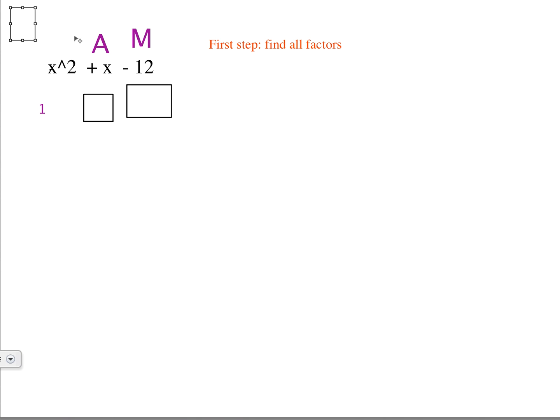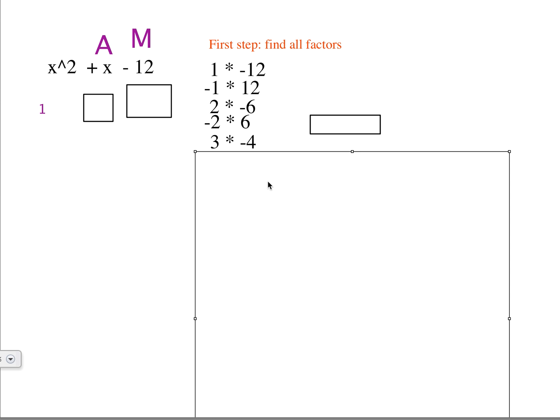And what I mean by that is you have to find all the factors that multiply to be negative 12 which are 1 and negative 12, negative 1 and 12, and you have to go back and forth and do both. You have to do the negative on each of the factors. And 2 and negative 6 and negative 2 and 6, 3 and negative 4, and negative 3 and 4.